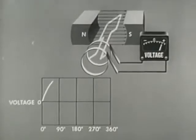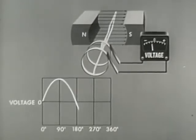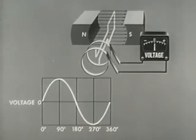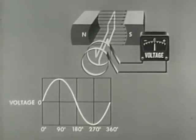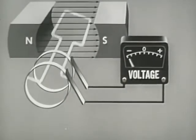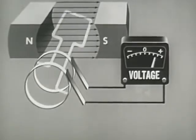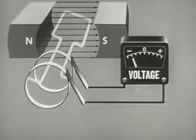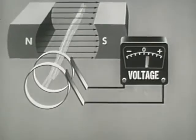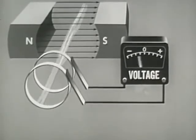All generators produce AC internally. In this basic AC generator, the arms of the loop cut lines of force in opposite directions, causing electromotive force of opposite polarity to be generated in the conductor. To maintain the AC character of the output in this generator, we use slip rings instead of the commutator segments used in the DC generator.